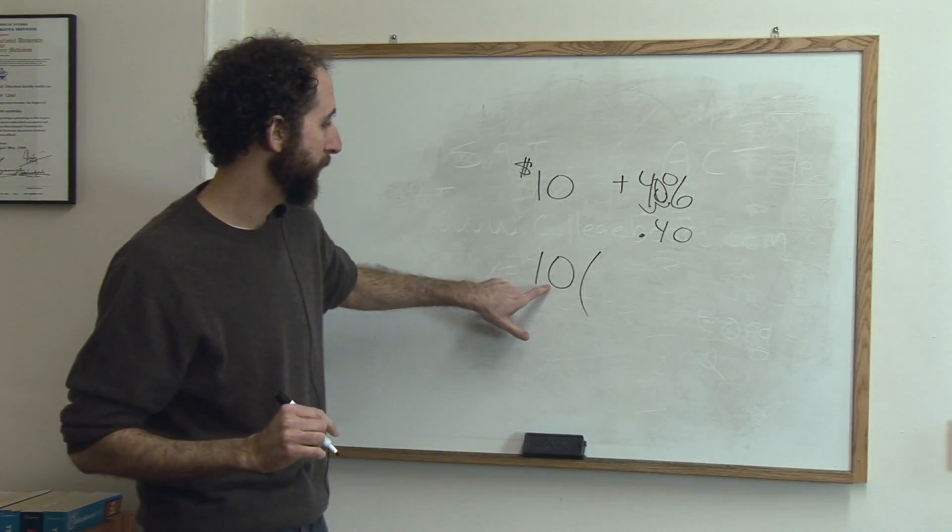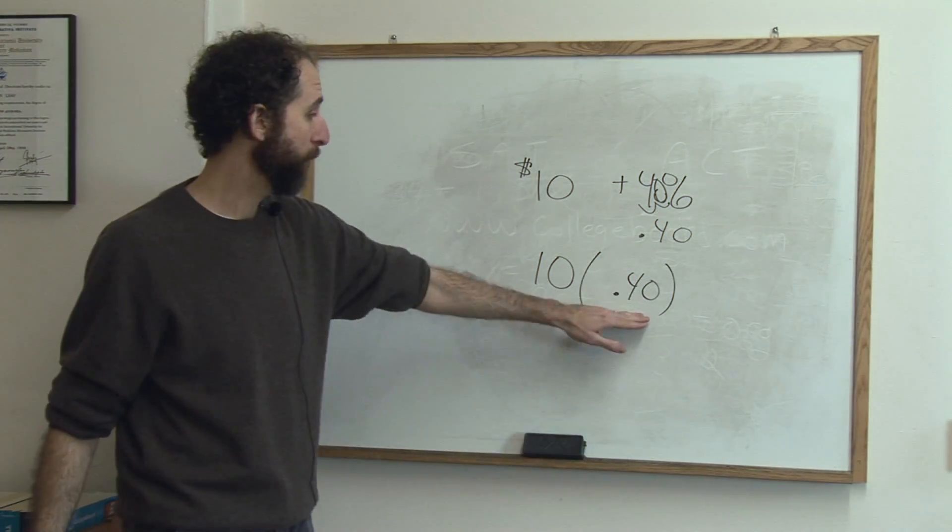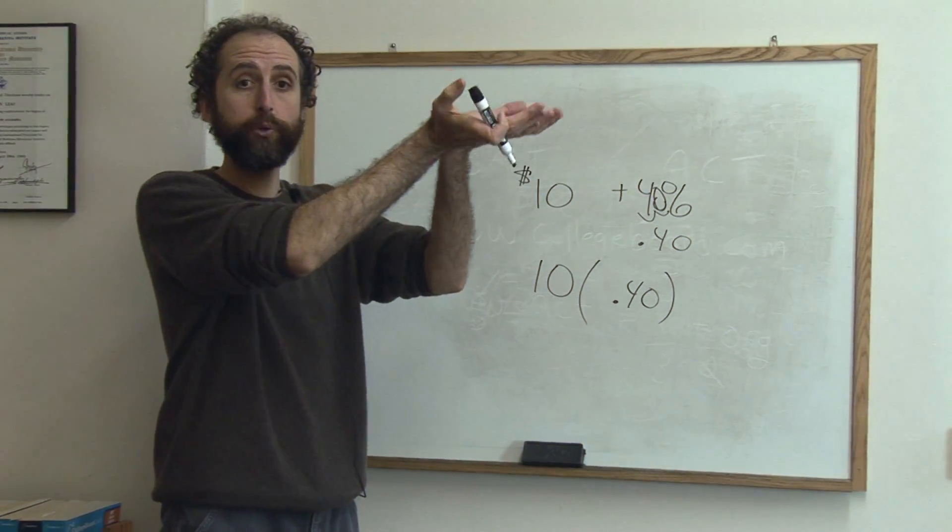It means you don't just multiply 10 times .40. If you did that, you would get 40% of 10, which is how much they're going to add to the shirt.